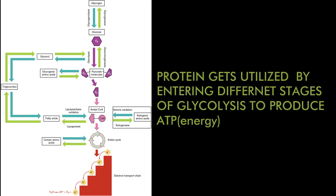If you consume only protein while doing activities without adequate carbohydrates or fats to supply calories, the body won't use that protein for structural demands. Instead, the amino acids get converted into energy by entering the glycolysis pathway, which generates ATP. In that case, protein is being catabolized for energy rather than being used for its primary function — building muscles, hormones, and enzymes.